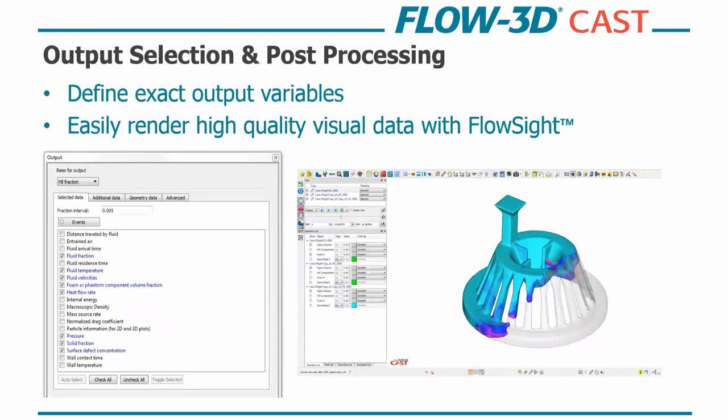So from there we're ready to go. We define our exact output variables. So with the fill, we usually want to look at fluid fraction, we're looking at temperatures and velocities of course, phantom component volume fractions, heat flows. I like to look at oxide formation, which is surface defect concentration, pressure and solidification. And then when you get Flow3Dcast, it comes paired with our post-processing tool called FlowSite. Now all the videos that you've seen or will see in this presentation have been made using FlowSite. And it's a very easy to use side-by-side comparison tool. And you can very simply define colors and variables that you want to see, or you can go very in depth and make custom color scales, custom outputs. And these will create beautiful high quality videos to really inform your decision making.